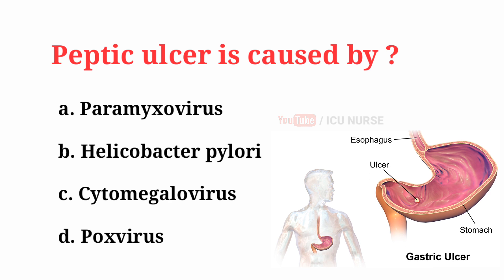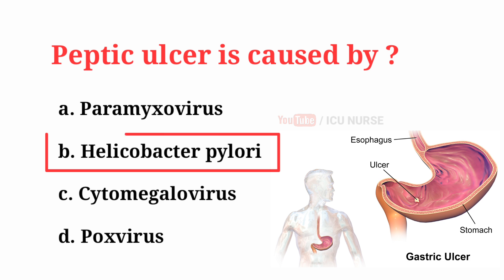Peptic ulcer is caused by? The correct answer is B, Helicobacter pylori.